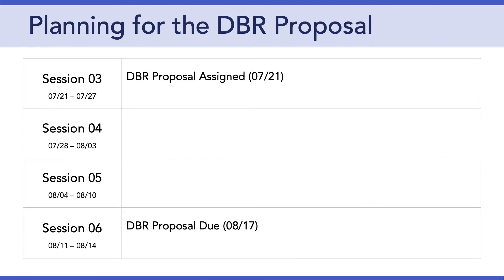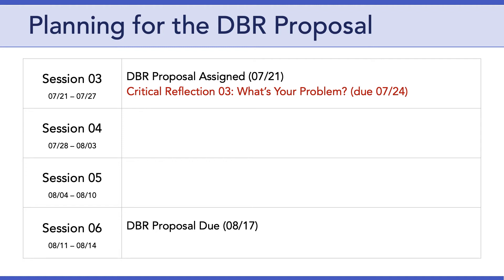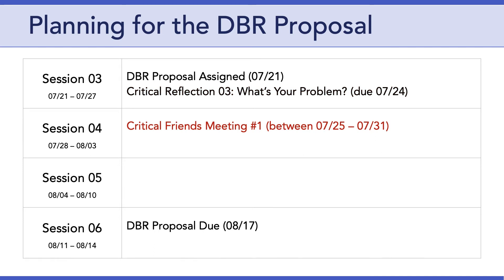Let's talk about how we're going to get from A to B. Due this Friday is Critical Reflection 3, which is titled "What's Your Problem?" I'll talk more about Critical Reflection 3 in a minute, but the whole focus is going to be to get you to begin specifying the problem that you are going to propose addressing through DBR. That Critical Reflection 3 is due Friday because I immediately want you to go into scheduling your first Critical Friends meeting, which should happen sometime between Saturday the 25th and Friday the 31st.